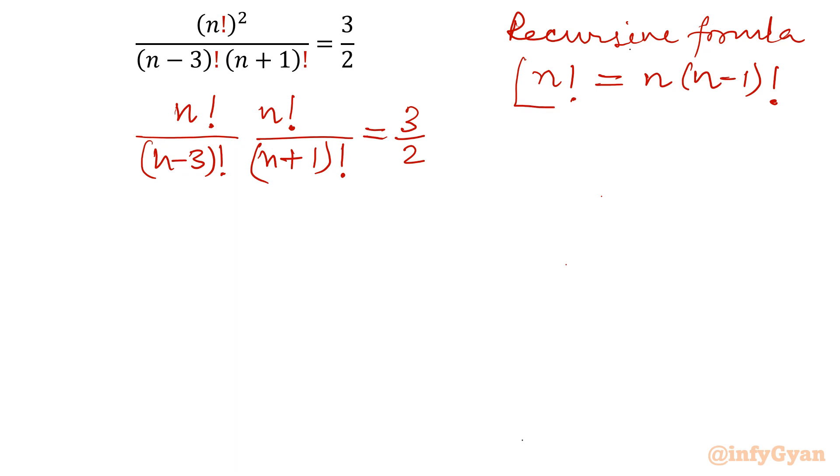Now we will use our recursive formula. The numerator n factorial I will write as n, n minus 1, n minus 2, n minus 3 factorial. And you can see denominator is n minus 3 factorial.